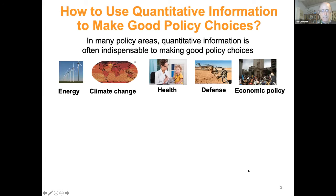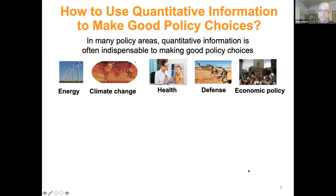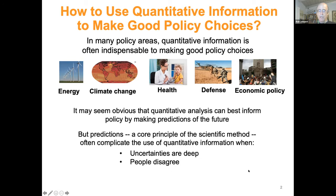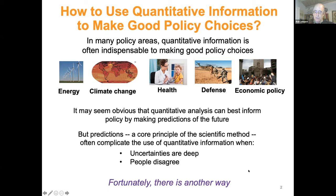In a whole range of areas — we've been discussing climate and natural hazards — it may seem obvious that quantitative analysis can best inform policy by making predictions about the future. But there are cases where predictions, which are obviously key to the scientific method, can complicate the use of quantitative information for decision support. This is the case when uncertainties are deep and there are substantial disagreements about values and evidence.